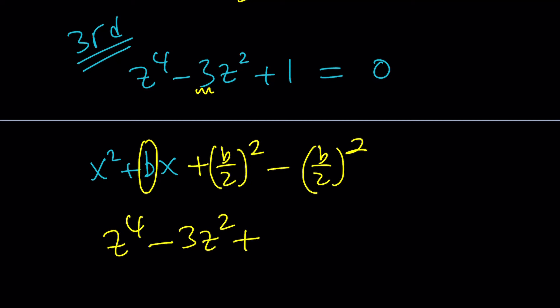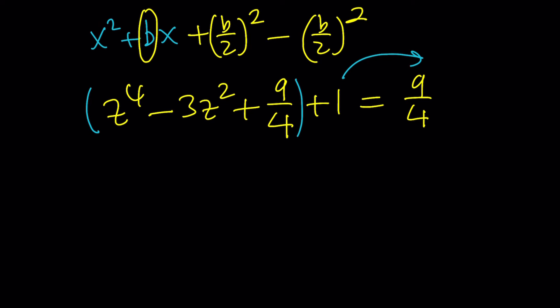And of course I can't just add it because I already had one, I also have to add it on the right hand side. The first three terms will be a perfect square, and then I can subtract my one. So I added 9 fourths to both sides but this became z squared minus 3 halves squared.